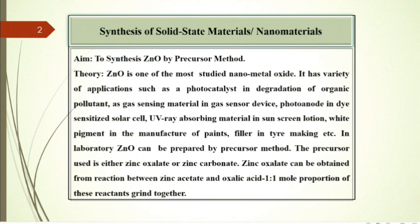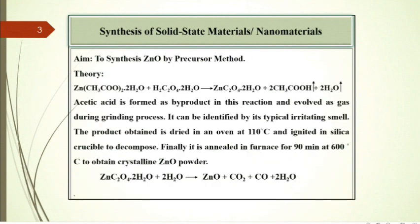Zinc oxalate can be obtained from reaction between zinc acetate and oxalic acid in 1 to 1 molar proportion. These reactants are ground together. Reaction is as shown over here.